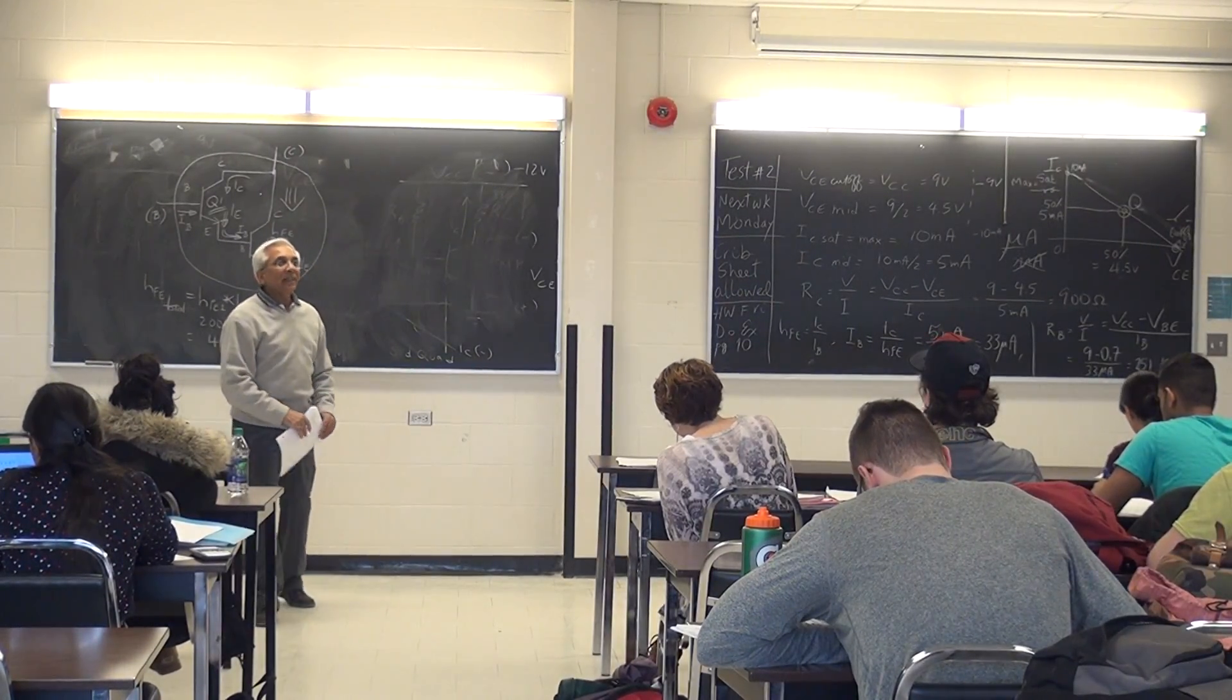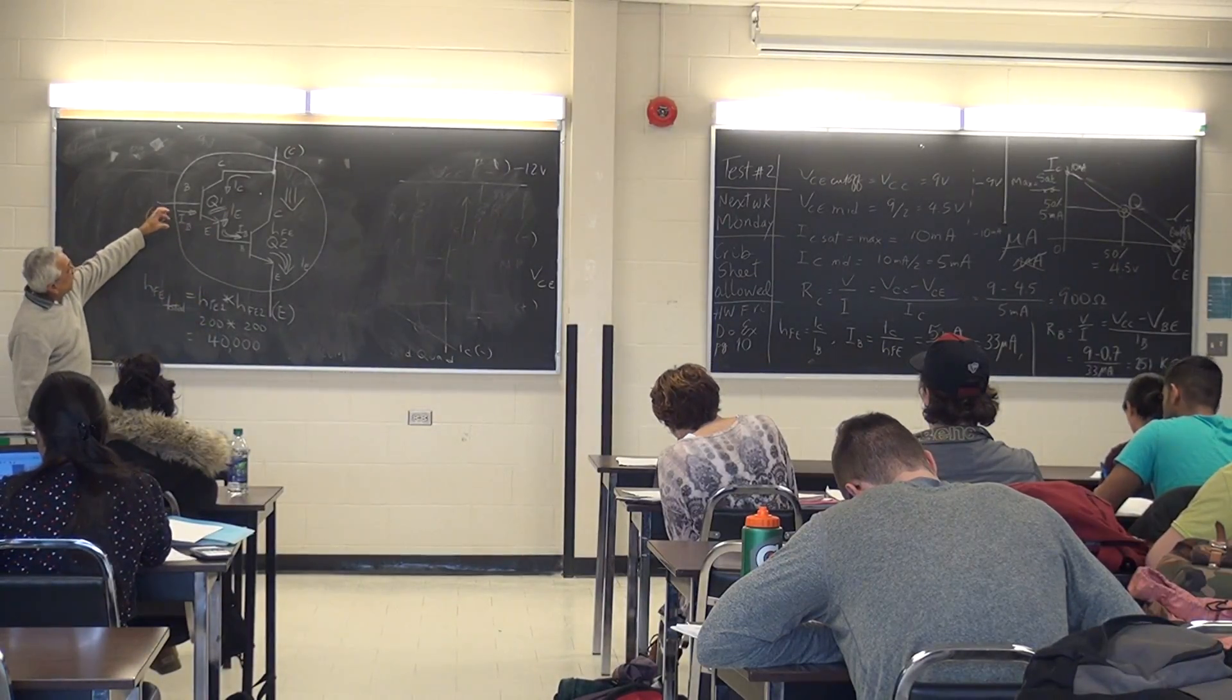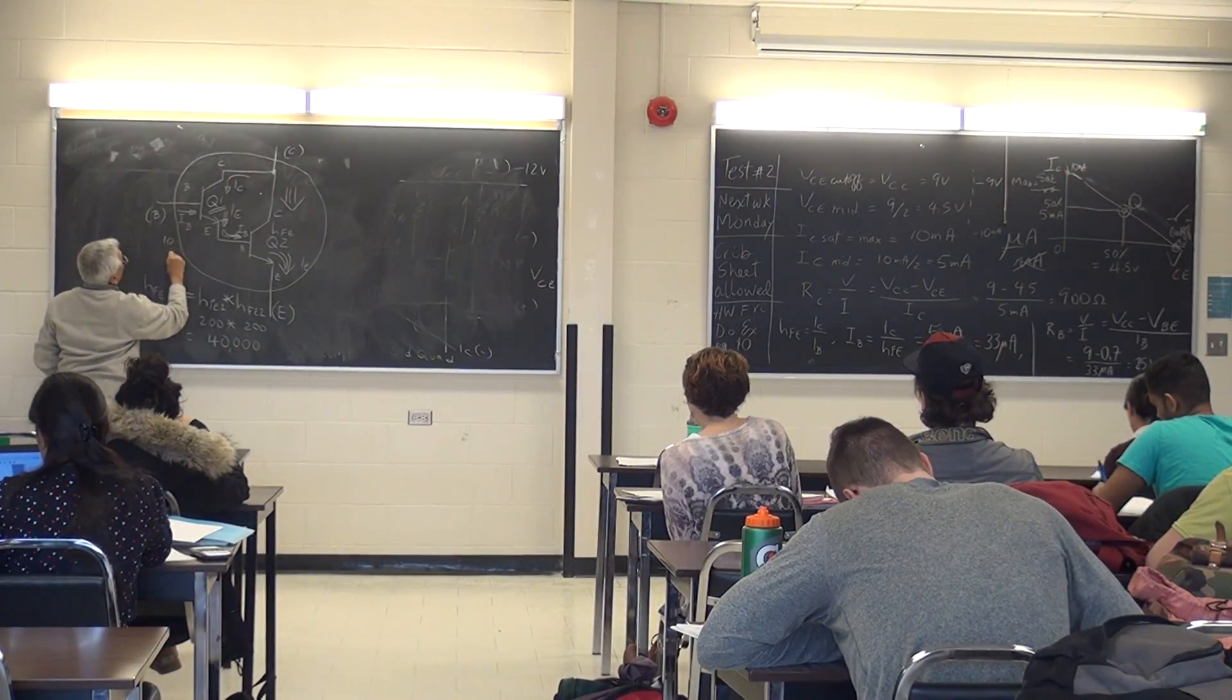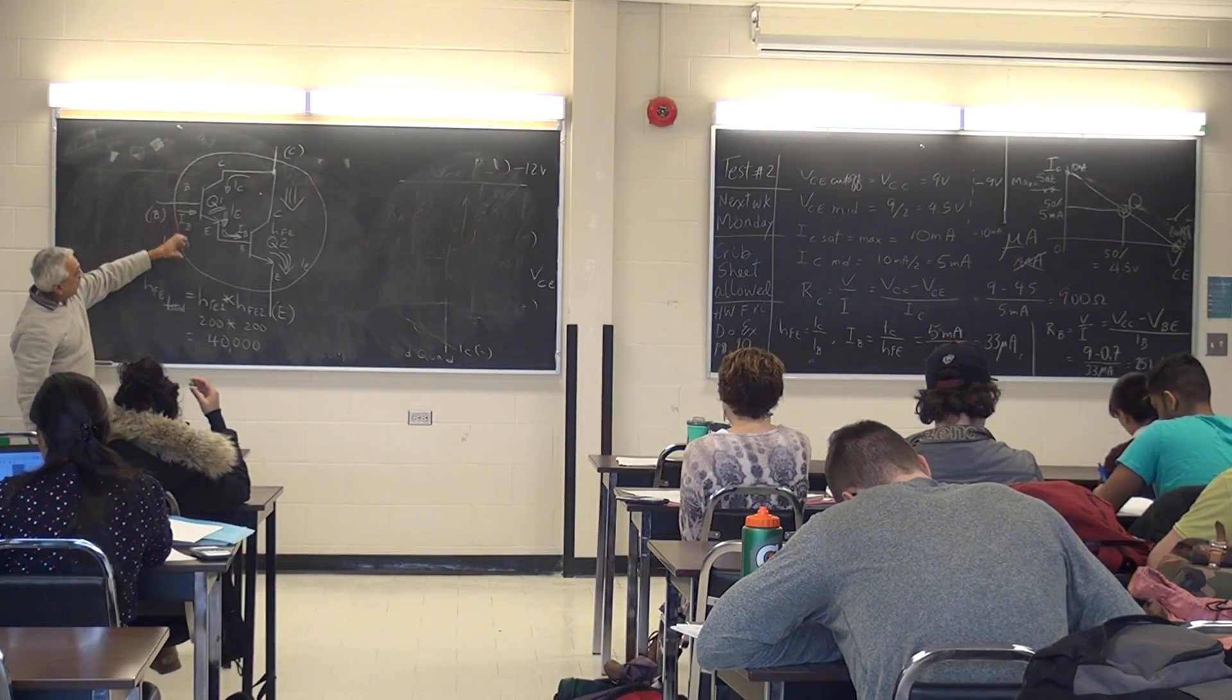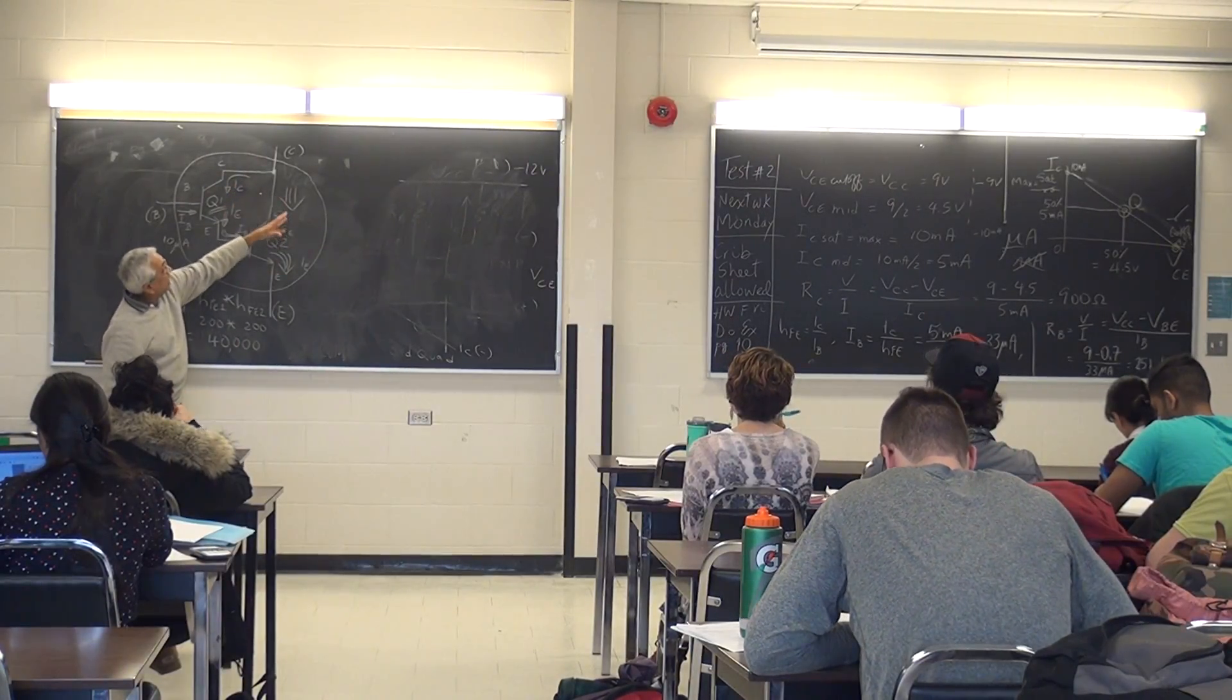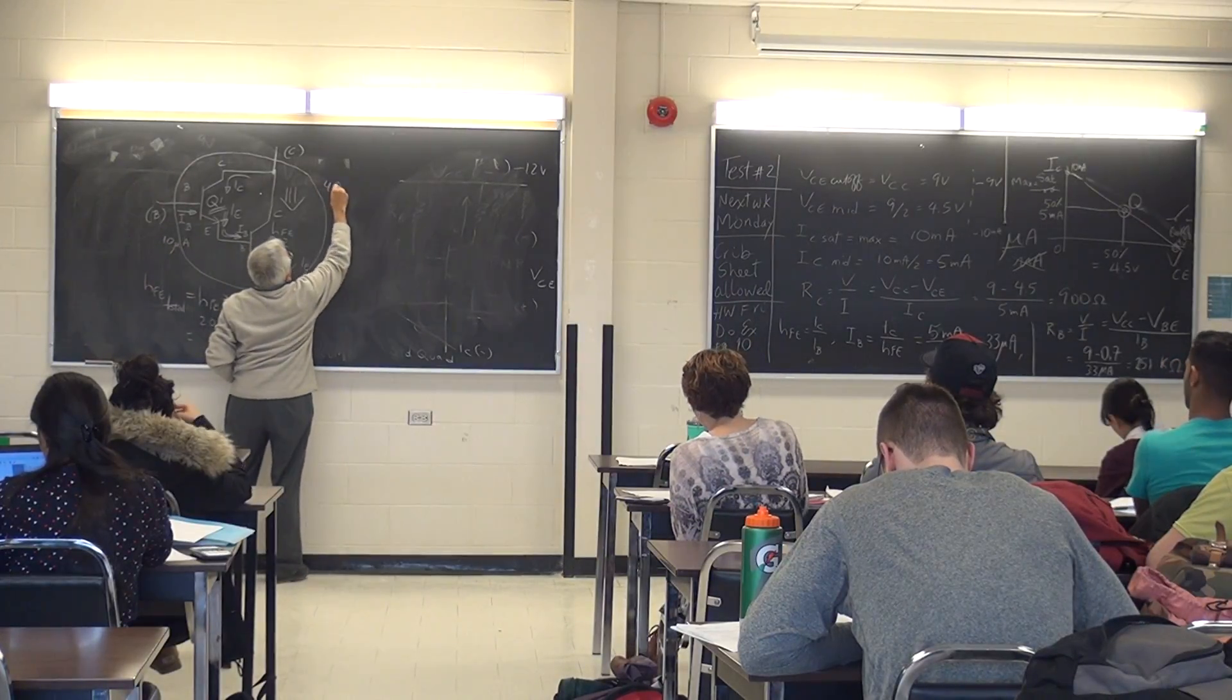A little bit of current here, let's say 10 microamps. So IB here is 10 microamps. Just a tiny little current of 10 microamps and it's going to be amplified to 40,000 times bigger on this circuit over here. So what is 40,000 times 10 microamps?